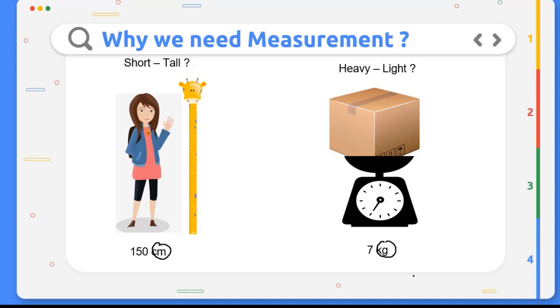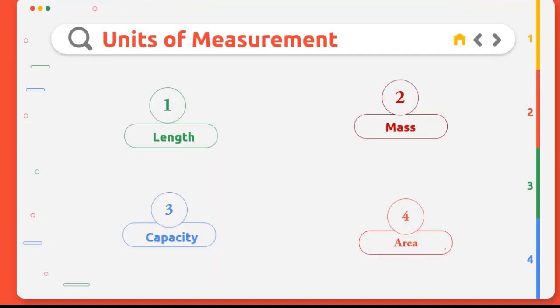Centimeters and kilograms are examples of what we call unit measurement. There are four units of measurement: length, mass, capacity, and area.